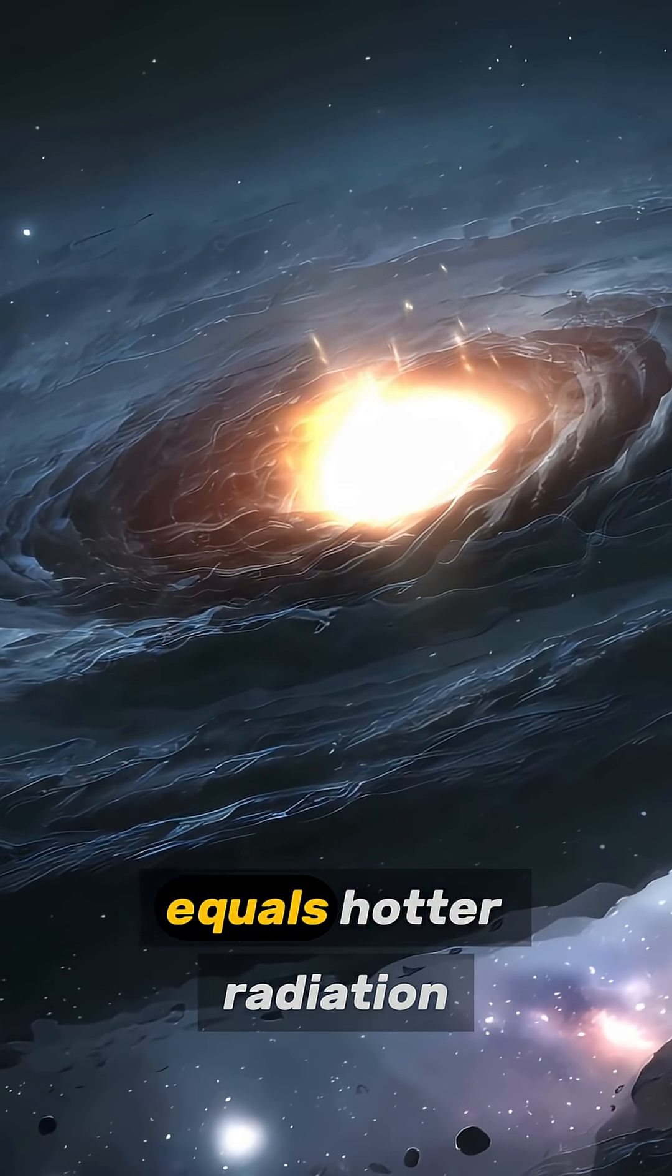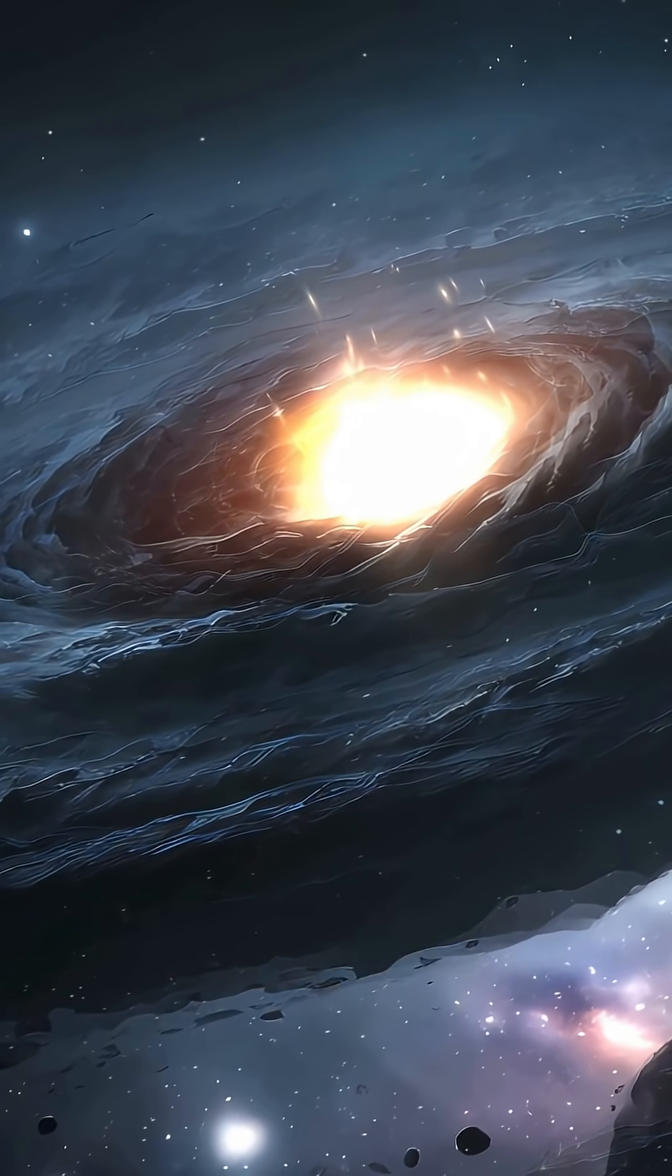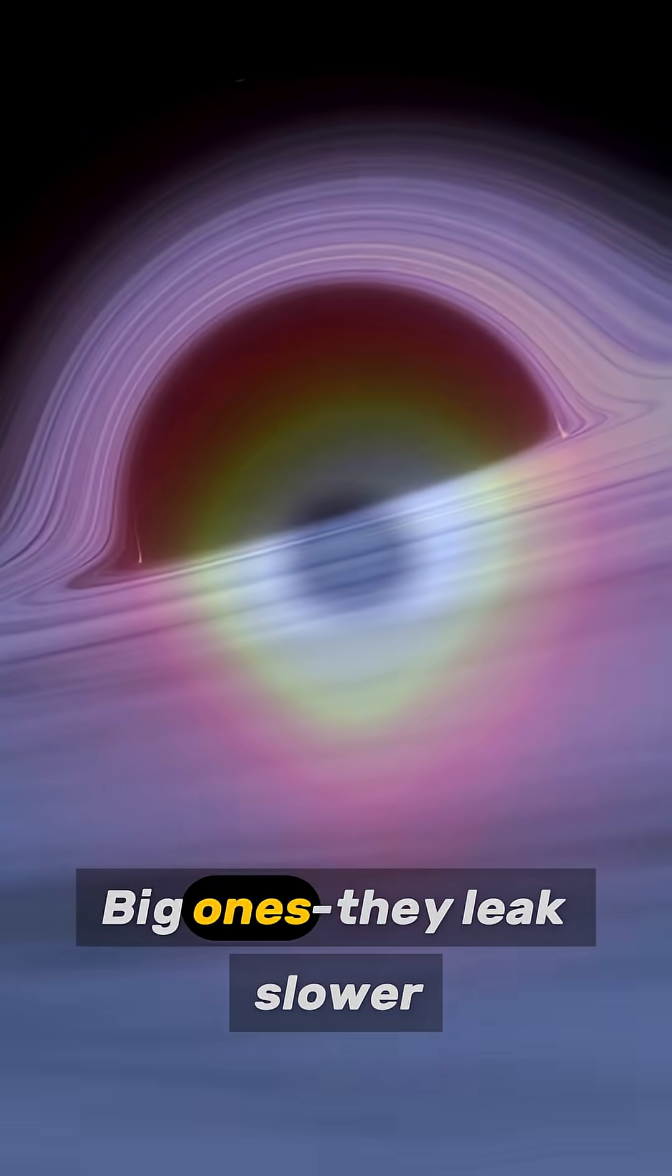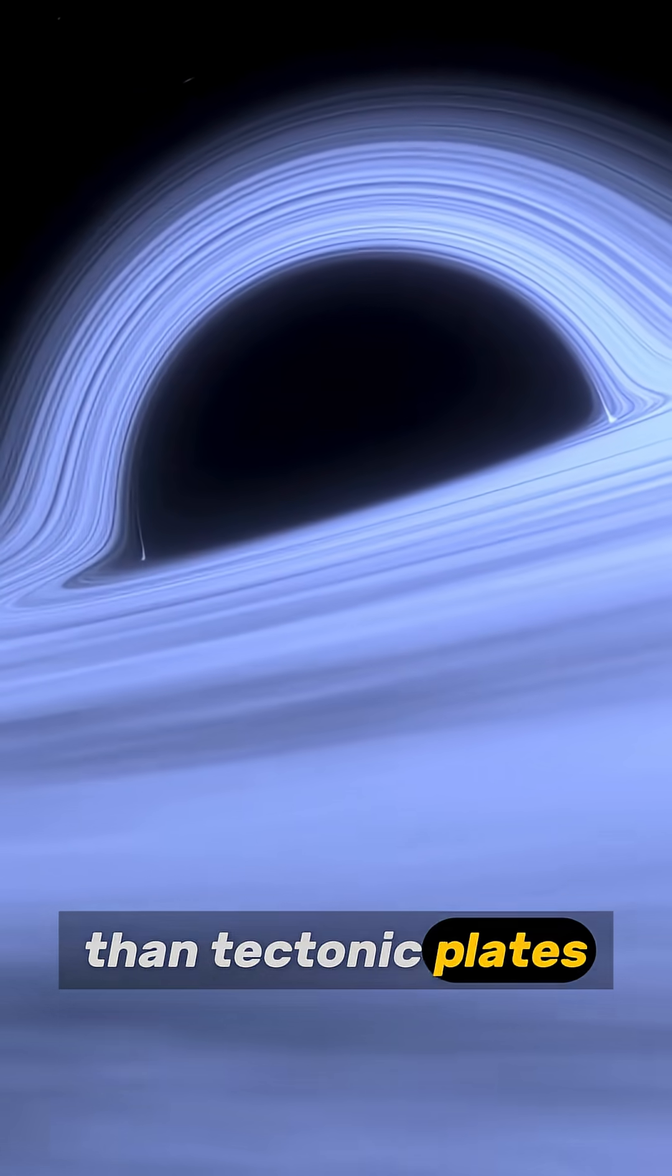Smaller black holes equals hotter radiation, faster leaks. A tiny one? It glows intensely and vanishes. Big ones? They leak slower than tectonic plates.